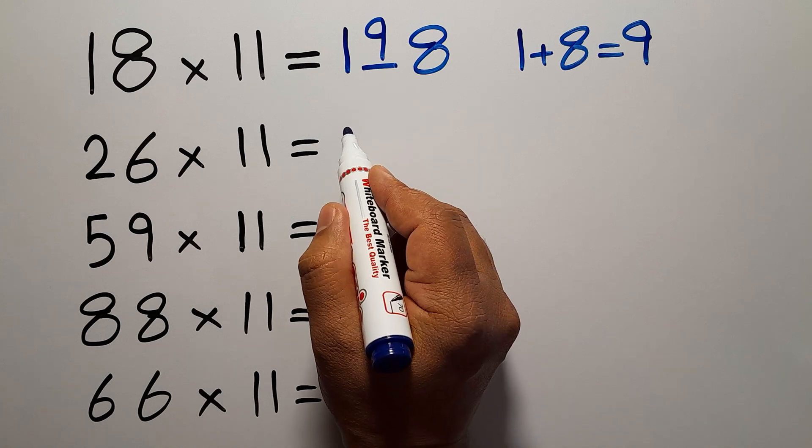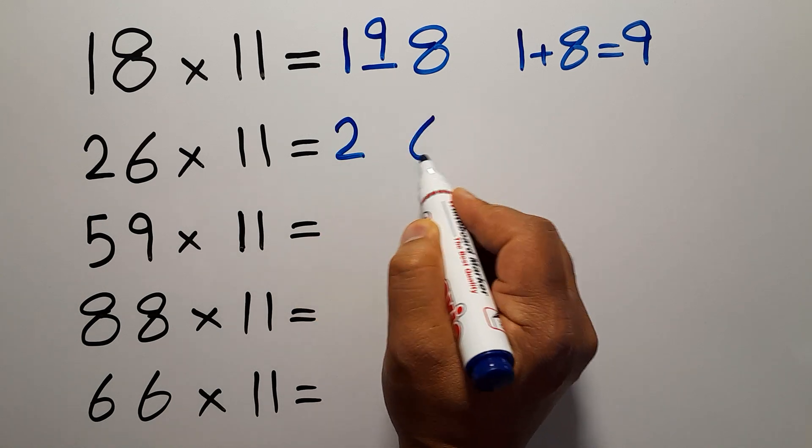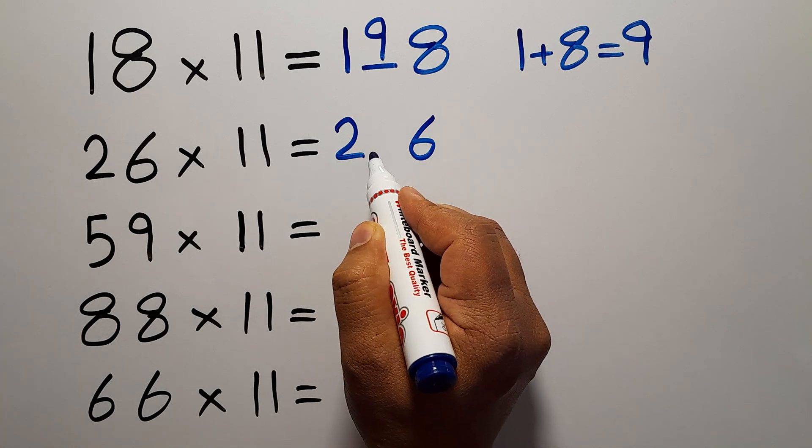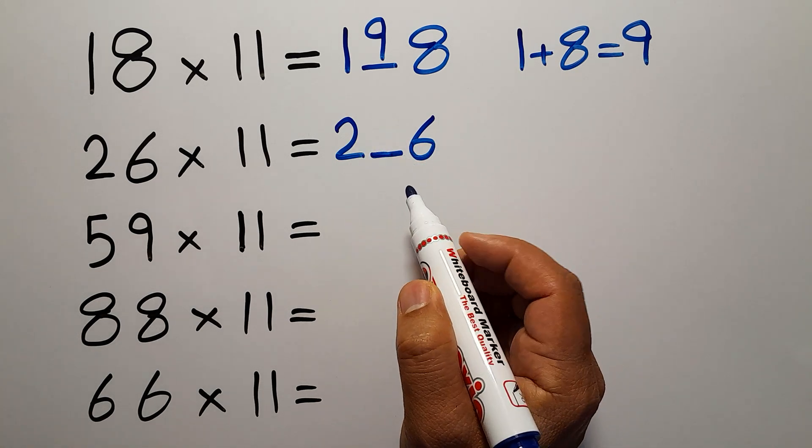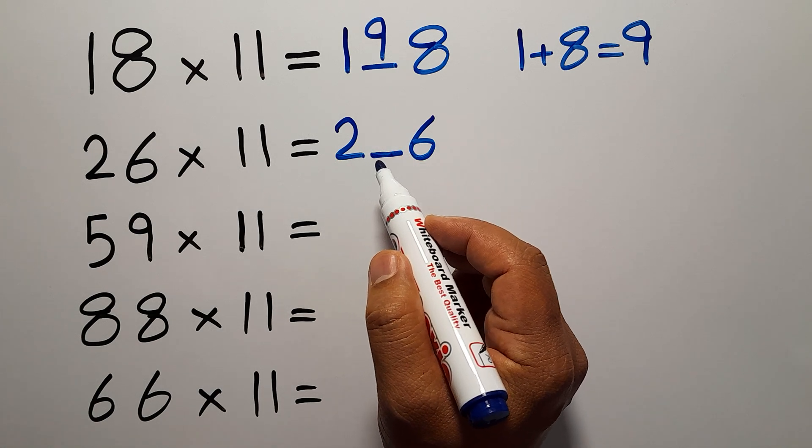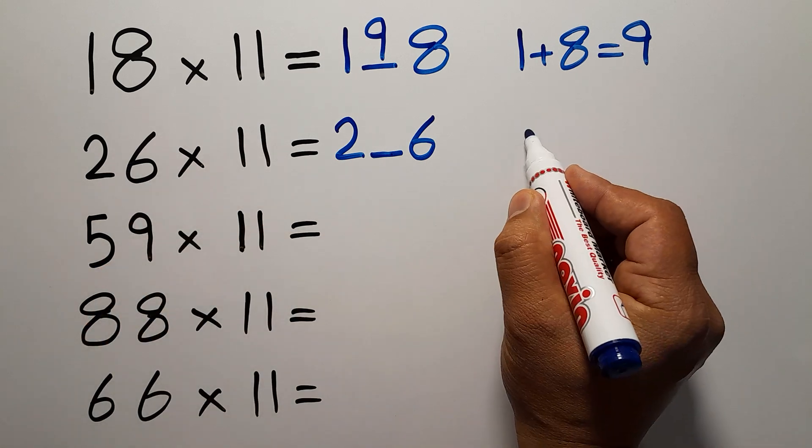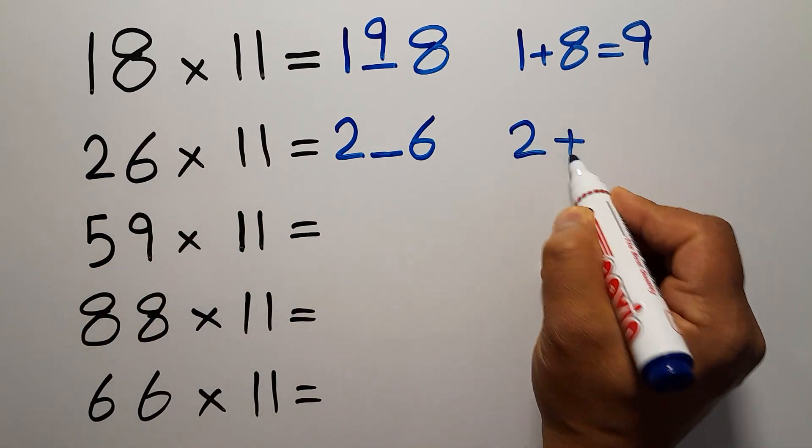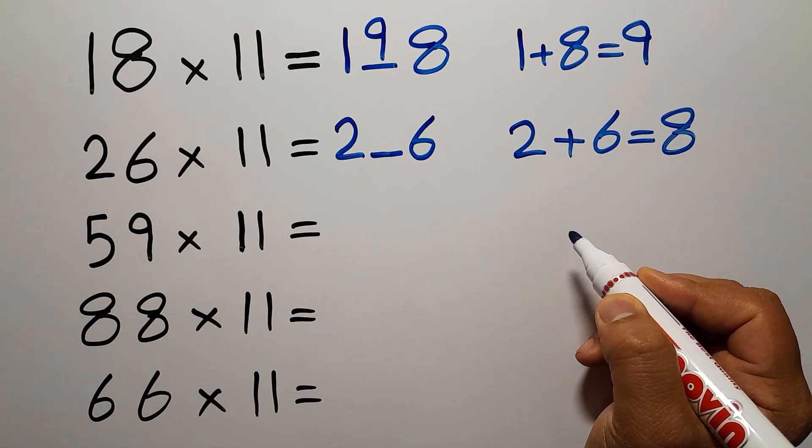First we write 2 and 6 here and leave a blank space here in the middle. To fill the blank space we need to add 2 and 6 together. So 2 plus 6 gives us 8.